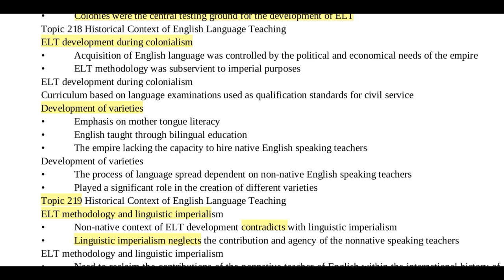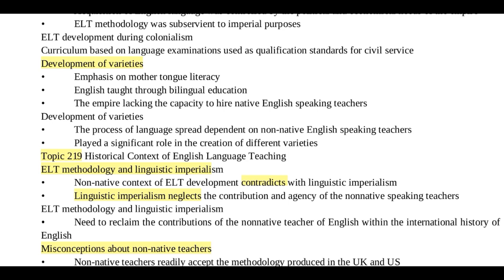English was taught through bilingual education. The empire lacked the capacity to hire native English speaker teachers. The development of varieties was a process of language spread dependent on non-native English speaker teachers, and this played a significant role in the creation of different varieties of English.